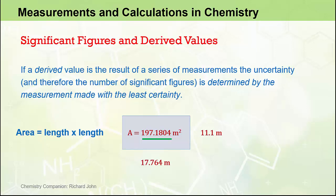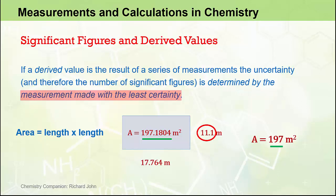So this number here, the magnitude 197.1804, has seven significant figures associated with it, whereas this number here has only three. The area value expressed here says we know the accuracy of the area of that rectangle down to one ten-thousandth of a square metre, and that's despite the fact that we only know the accuracy of one of the lengths to one-tenth of a metre. So clearly the level of accuracy, the level of certainty, and the number of significant figures expressed in this area value are too high. The area is more correctly expressed as 197 metres squared, which has three significant figures to match the three significant figures in the 11.1 metre value — the original measurement made with the least certainty.